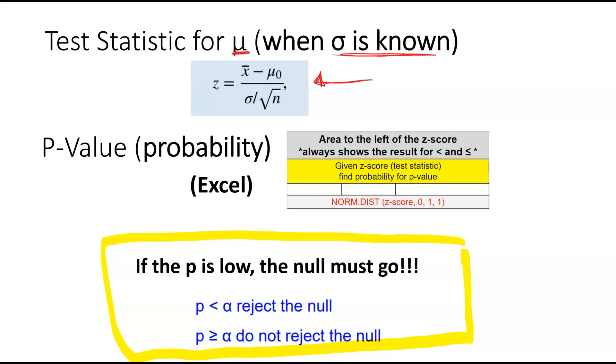So if the p is less than our significance level, we reject. And if it's greater than or equal to, we're not going to reject.